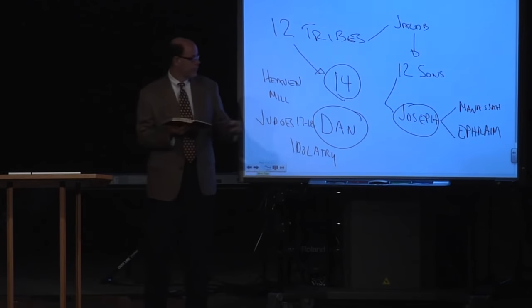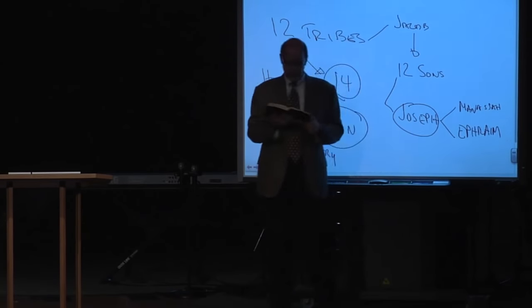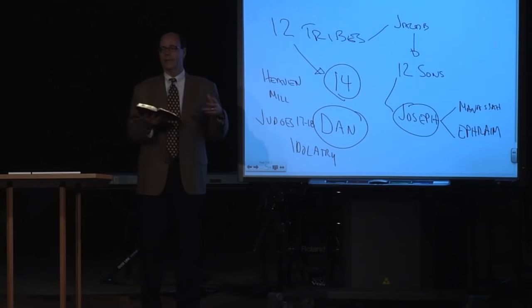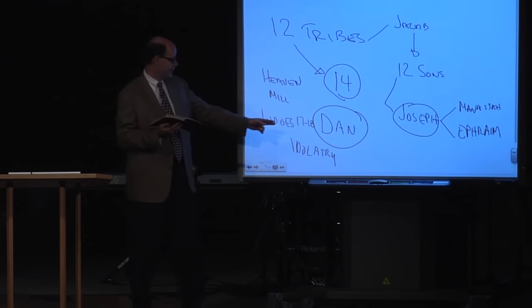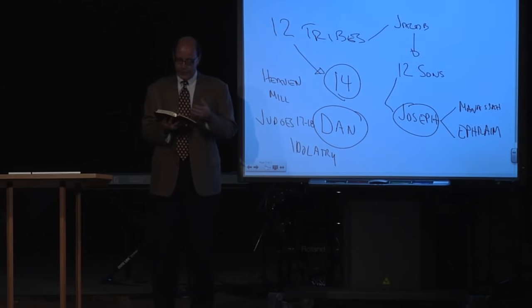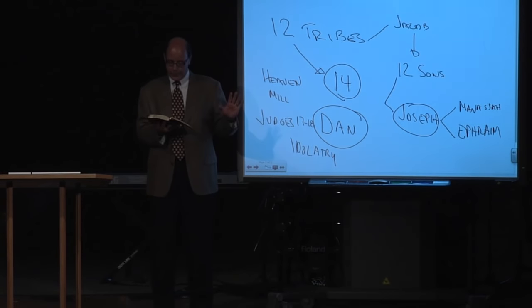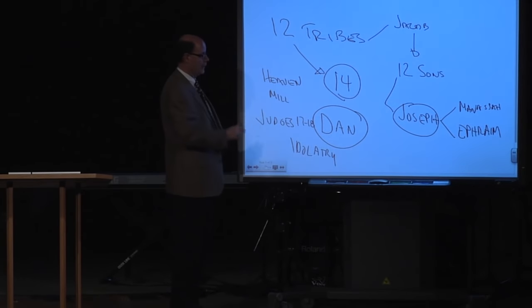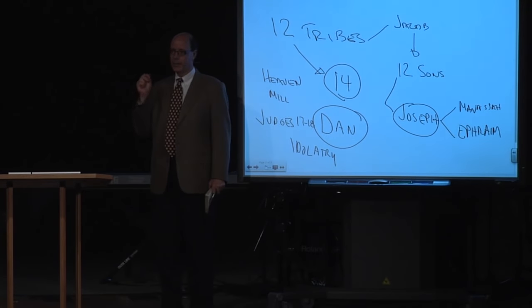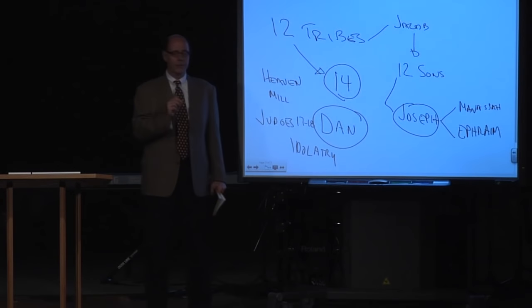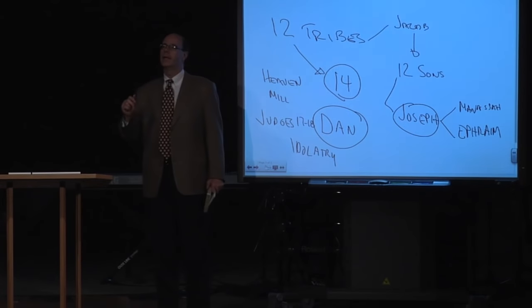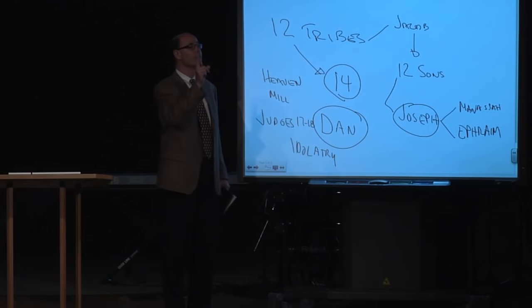In Judges 17 and 18, a man from Ephraim named Micah gets some money, makes an idol, and the Danites want it and adopt his idolatry. One man in chapter 18 influences an entire tribe. As a result, the whole tribe of Dan becomes thought of among all the tribes as apostate idol worshipers.